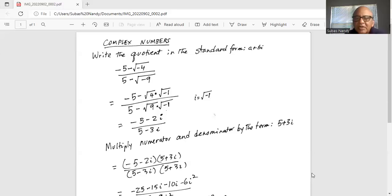Hence the numerator becomes minus 5 minus 2i because square root of 4 is 2 and i is square root of minus 1, and the denominator becomes 5 minus 3i because the square root of 9 is 3.